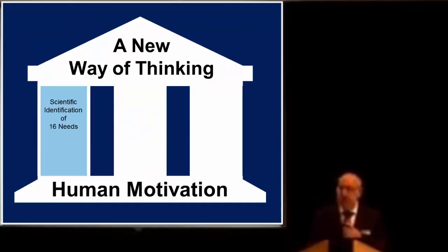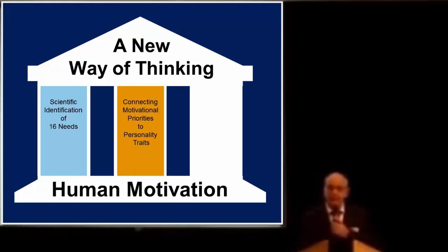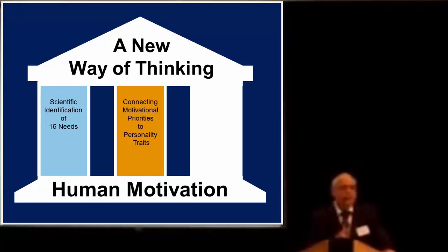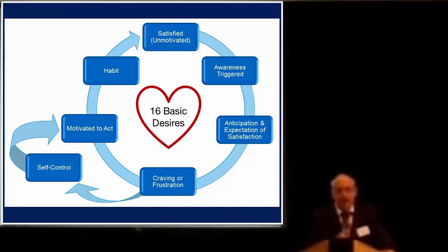The second pillar — the one in which we're really unique — is the concept of priority. Throughout all social sciences, a motive is something people want, and when they get it, the motive is satisfied. You're hungry, you eat, you're not hungry anymore. You're lonely, you socialize, you're not lonely anymore. That's how everyone thinks about it. The Reese Profile has a very different notion: these motives don't go away, they come back. You're hungry, you eat, you're not hungry — but come back five hours later and the person's hungry again.